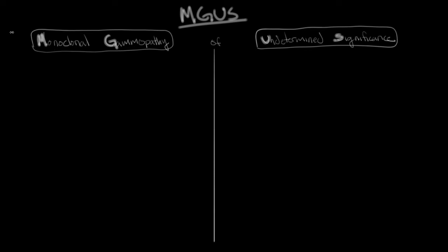I'm going to start with monoclonal gammopathy over here on the left. I'm going to go over a simplified explanation of the pathophysiology of MGUS as well as multiple myeloma. Both of these disorders originate in the bone marrow, so let's draw bone here. The bone marrow is the central part of the bone, and it's where blood cells are produced.